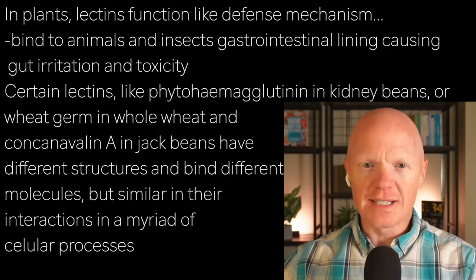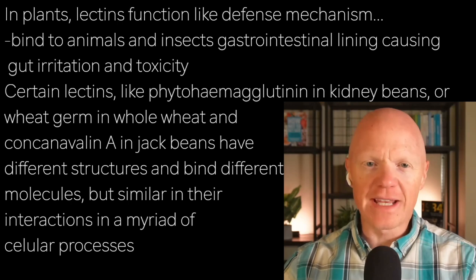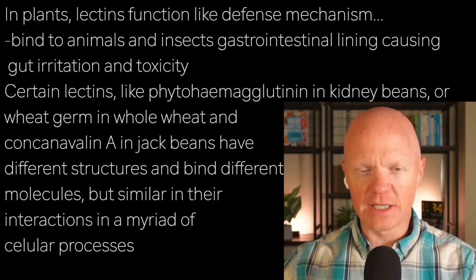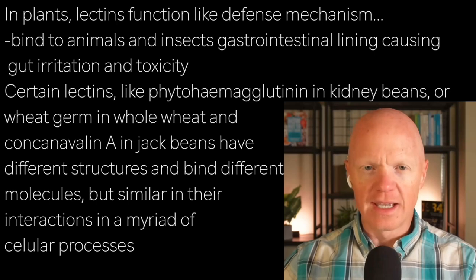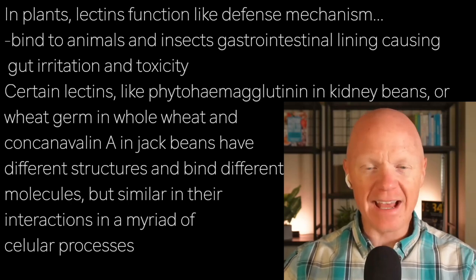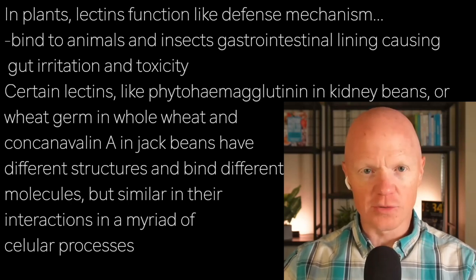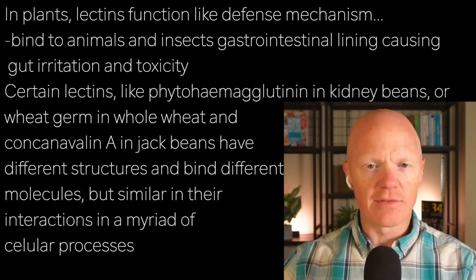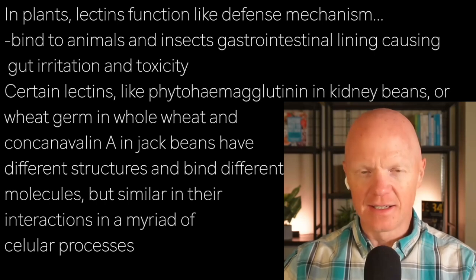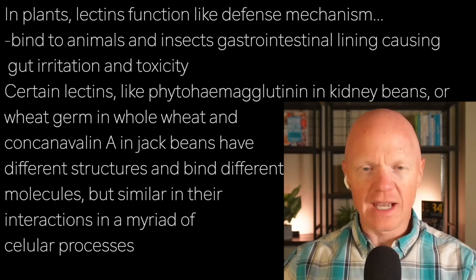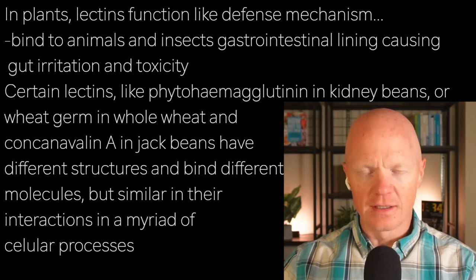Certain lectins, such as phytohemaglutinin in kidney beans, wheat germ agglutinin in whole wheat, and concanavalin A in jack beans, vary in structure — and there are many others not mentioned. They have a variety of structures and specificity in what they're binding, but what they have in common are their interactions in the myriad cellular processes that we're going to go through.